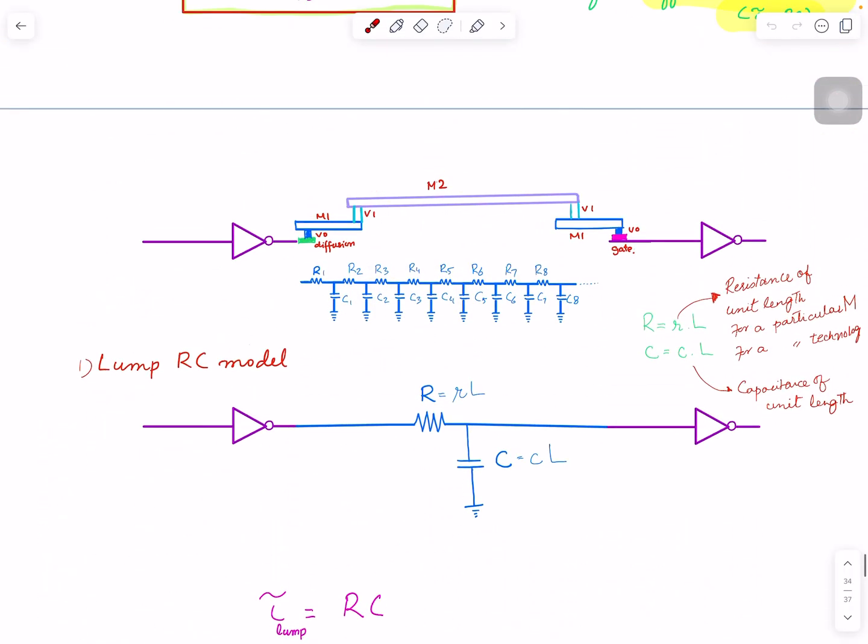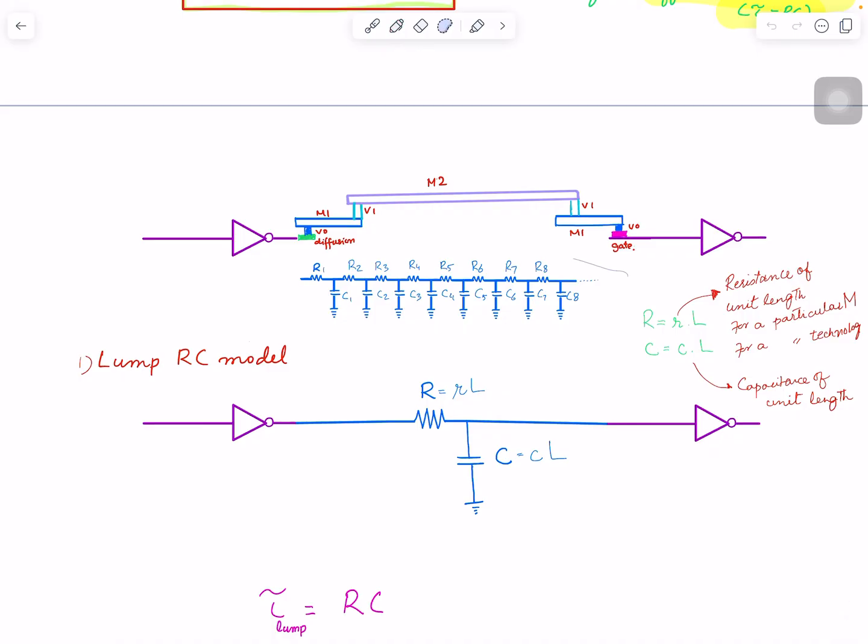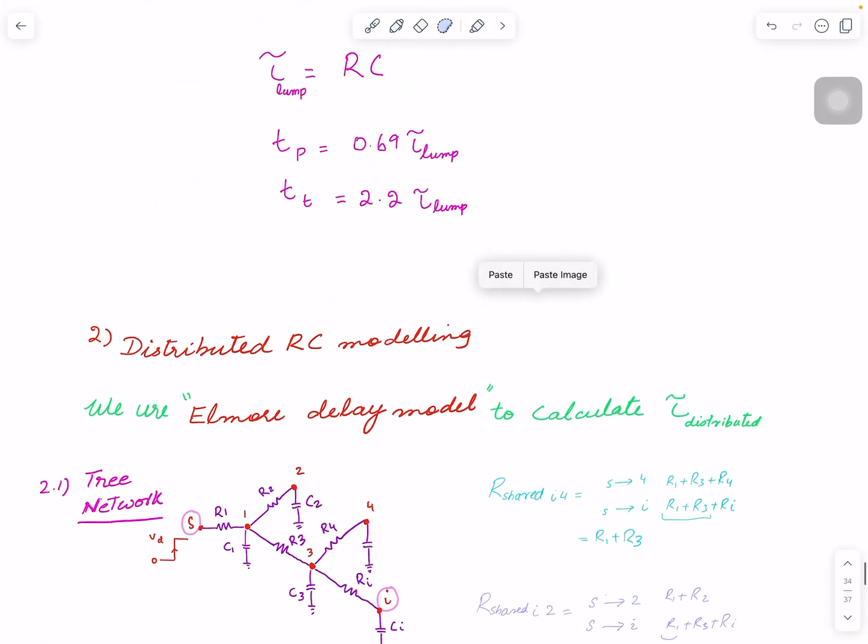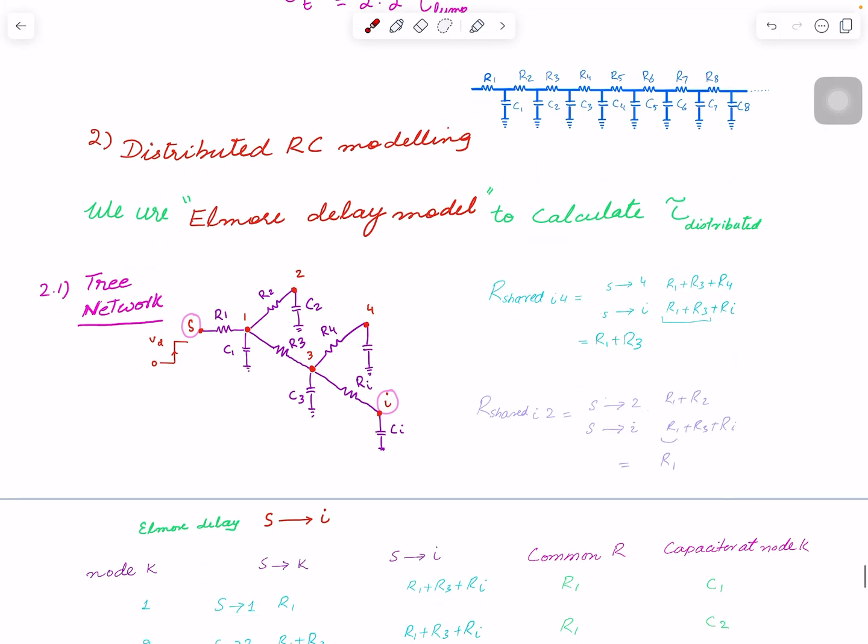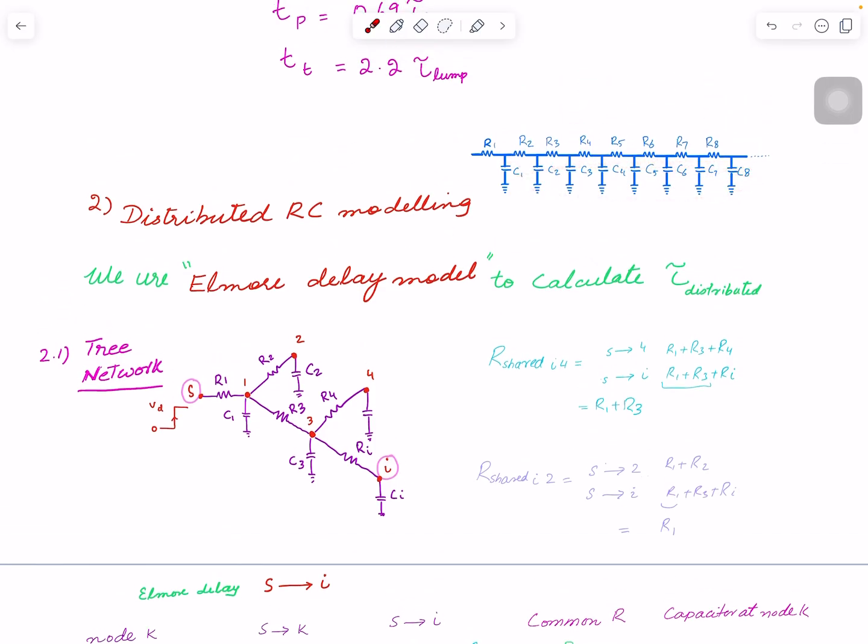A better model is a distributed model, which is actually this one. This model is better where you divide the whole length into smaller lengths and calculate resistance and capacitance for each of those. I will show you an example of that.